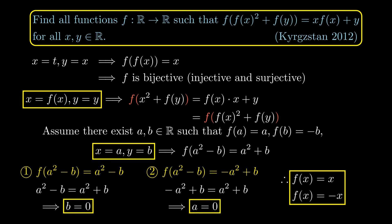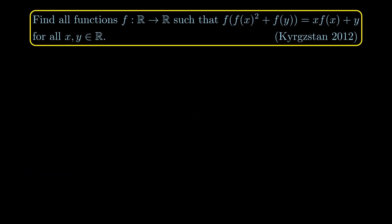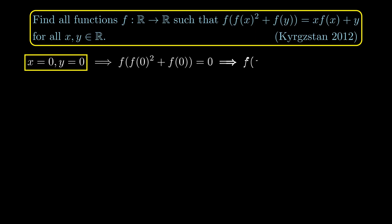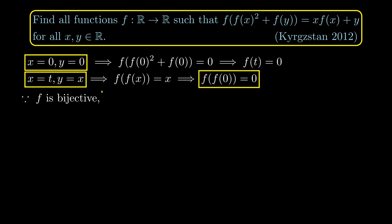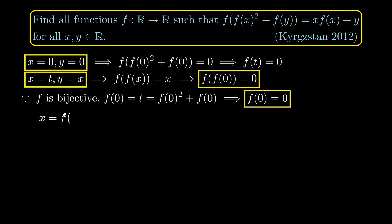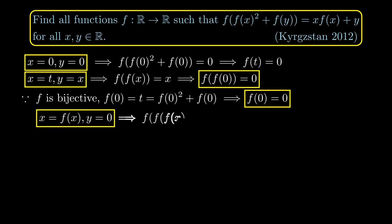Here is another solution that does not deal with the pointwise trap. We first proceed as in the first solution: set x = y = 0 to get f(t) = 0, then setting x = t and y = x gives the involution property f(f(x)) = x. In particular, f(f(0)) = 0. Since f is bijective, f(0) must equal t, and t equals f(0)² + f(0), so cancelling out f(0) gives f(0) = 0.